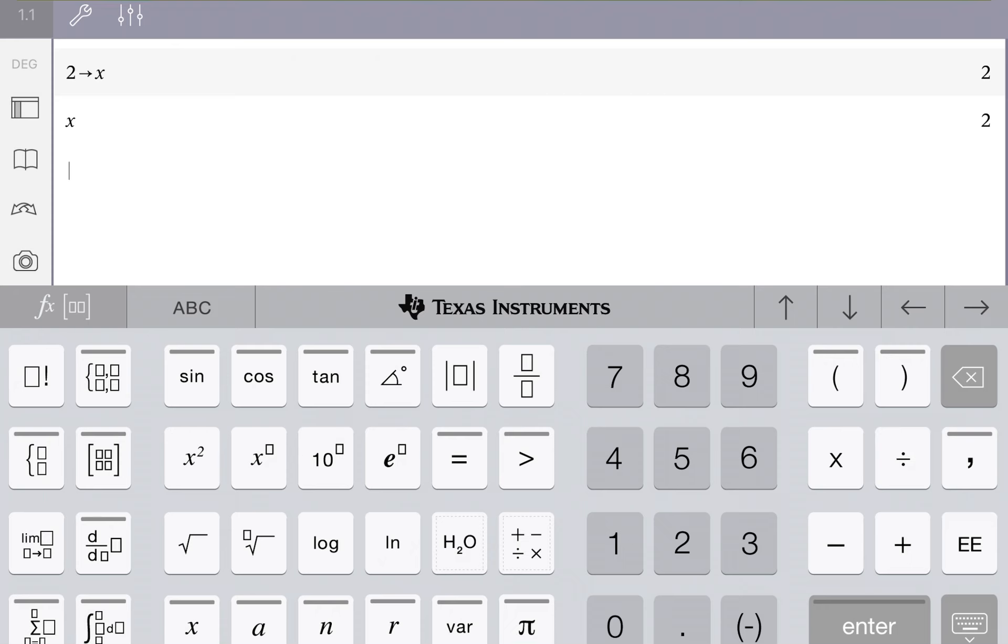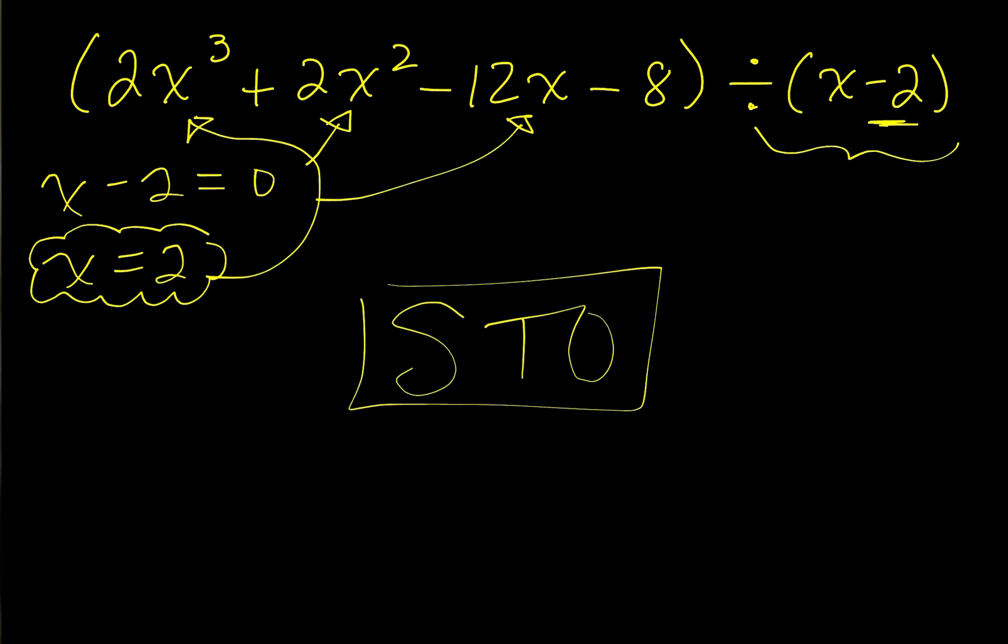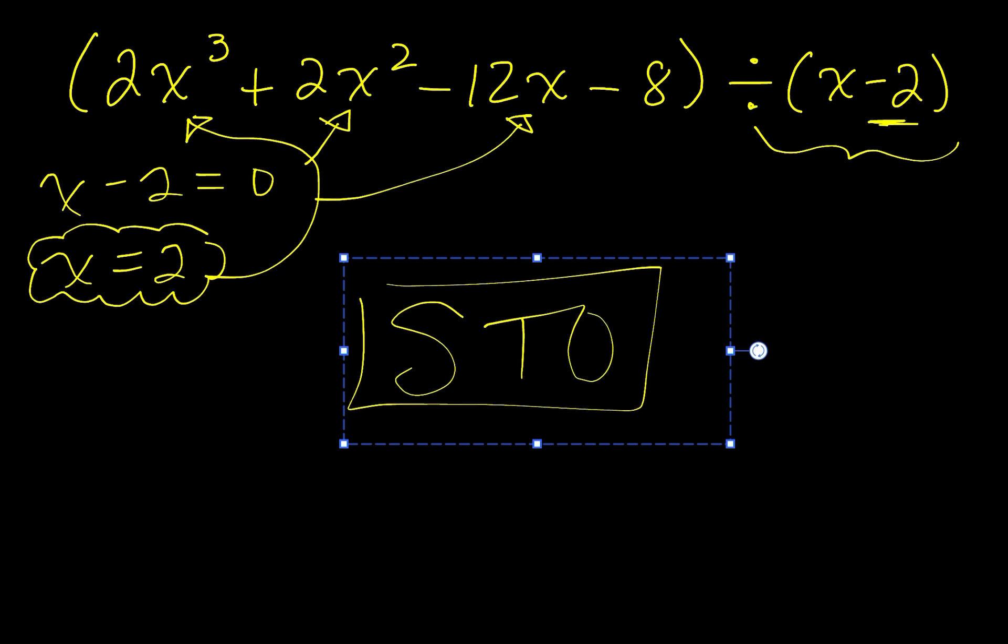Let's type in our polynomial, which was 2x to the third power plus 2x squared minus 12x minus 8. And you can see here it gives us a remainder of negative 8, which is what we got the first time. Now, if you don't have access to the calculator, this is what it would look like doing this. I would call it the by-hand method.